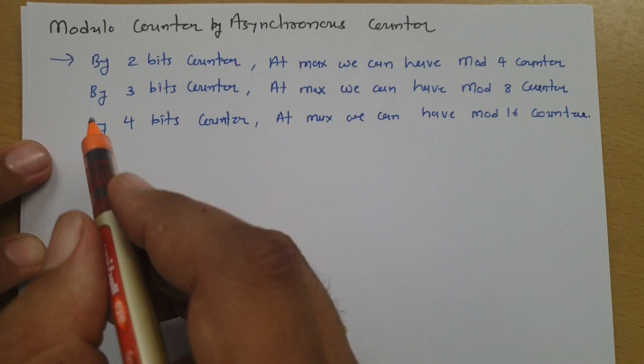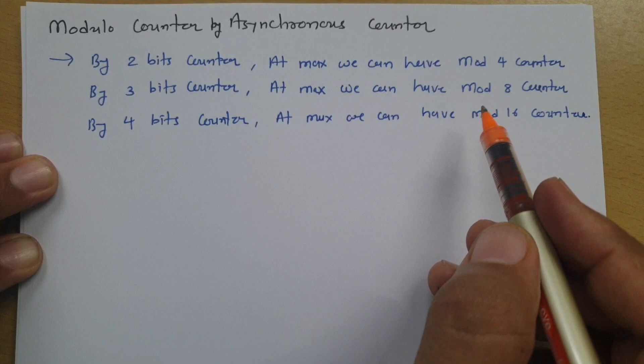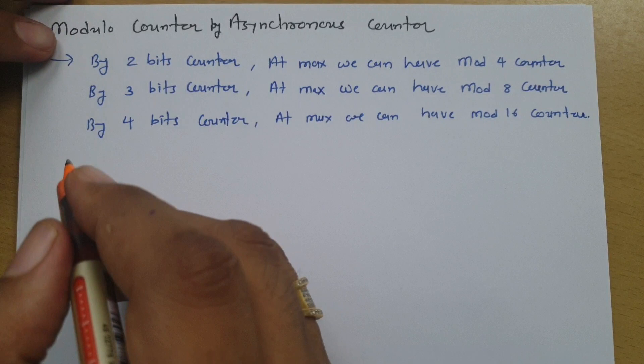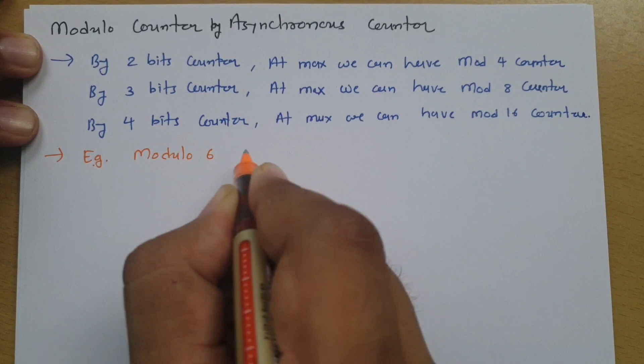So, as I have told you, with respect to the number of bits we can define modes. This is the maximum mode we can have based on the number of bits. But for example, if there is a question like 'design a modulo-6 counter,' then what do we need to do?